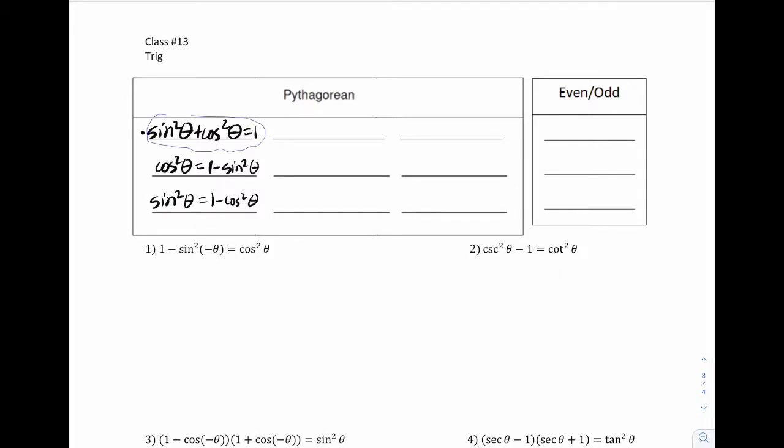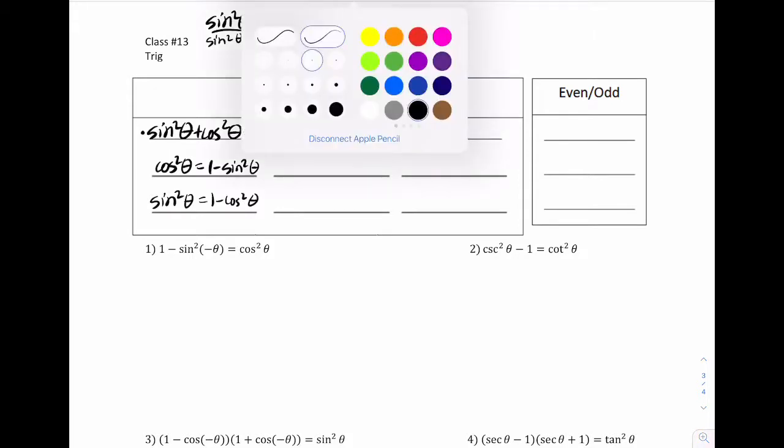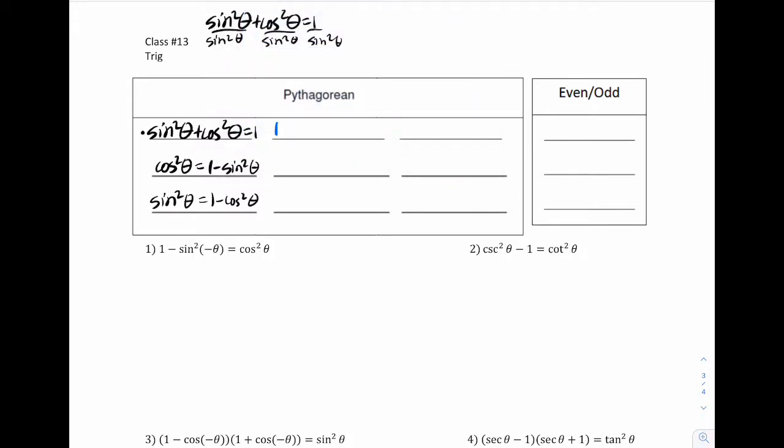Now what I'm going to do is grab this one. And I'm going to manipulate it algebraically to create something else. I'm going to divide everything by sine squared. If I do that, look what happens. I'm going to get 1 plus cotangent squared theta is equal to cosecant squared. So look, it's a whole other identity.